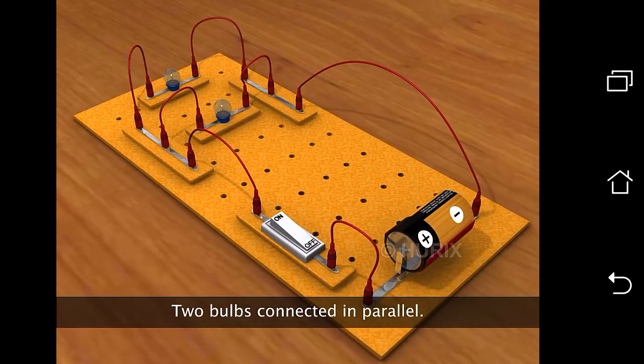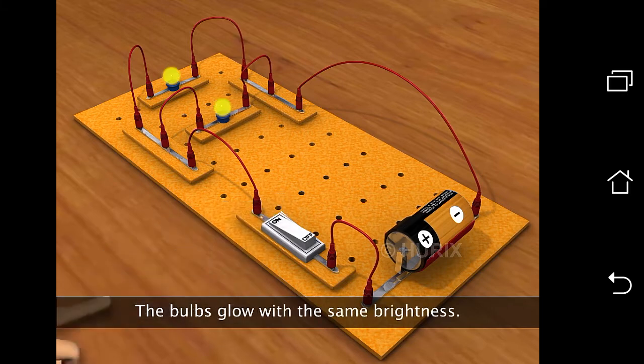Let's see what happens if the bulbs are connected in parallel. As you can see, the bulbs glow with the same brightness. In a parallel connection, all the bulbs get the same voltage.